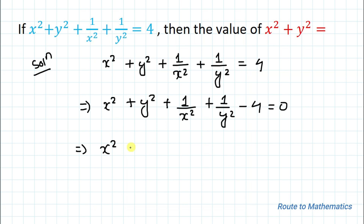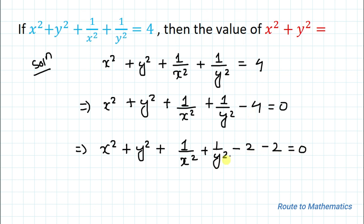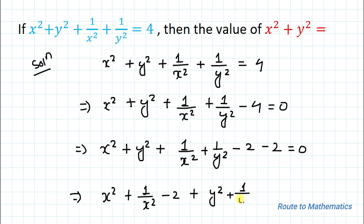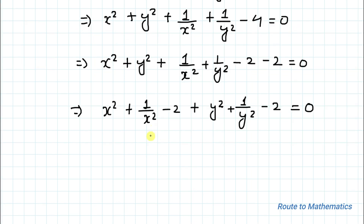In the next step I am going to split this -4 as -2 and -2, because -2 and -2 equals -4. Then we arrange the x terms with one -2 and the y terms with the other -2, giving us: x² + 1/x² - 2 = 0 and y² + 1/y² - 2 = 0.